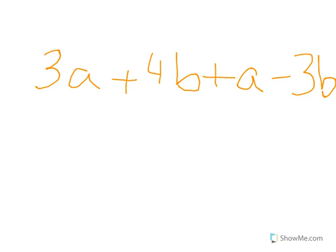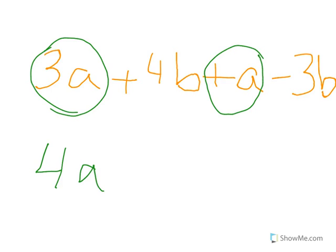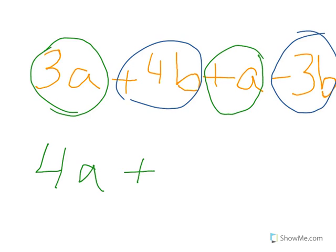I'll add the terms with the same units. 3a can be added with a: 3 plus 1 is 4a. Then I can add 4b and minus 3b: 4 minus 3 is 1b. That's my answer: 4a plus b.